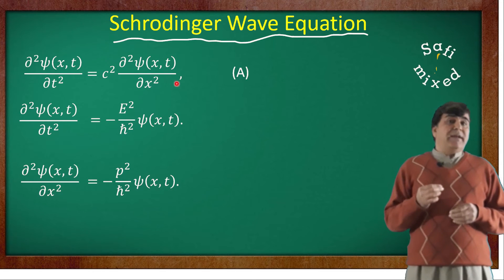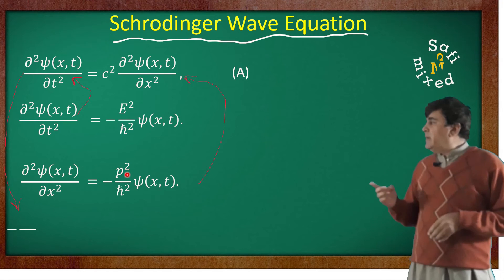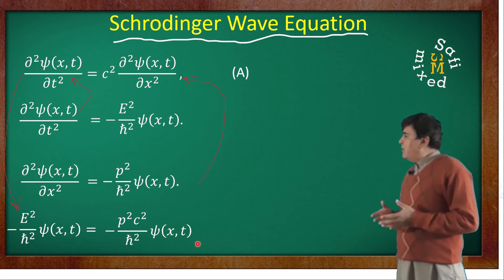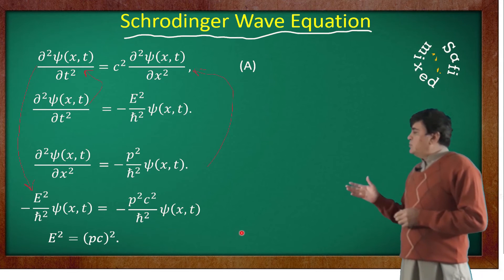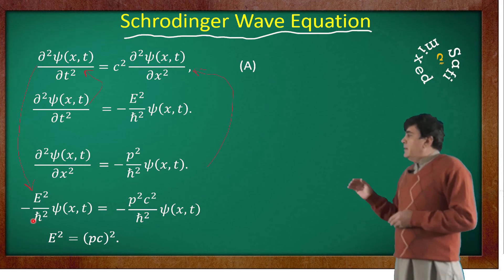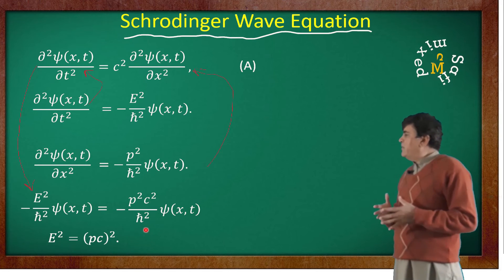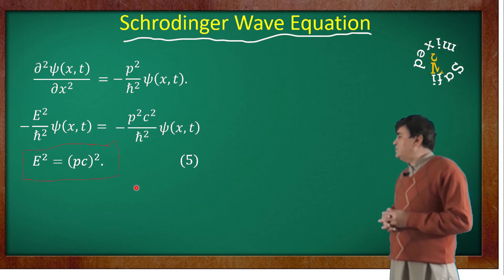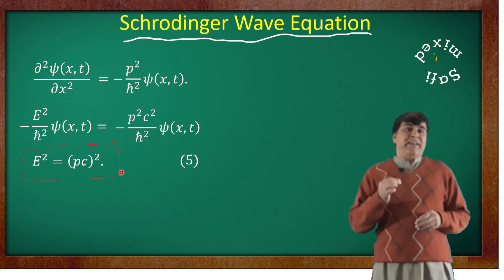Substituting these results into equation A, we get: minus E squared over h-bar squared times psi equals minus p squared c squared over h-bar squared times psi. Since both sides have the wave function multiplied by numbers, we can cancel the wave function and h-bar squared, and the equation reduces to E squared equals (pc) squared. This is a very interesting result.